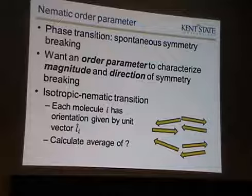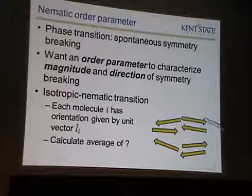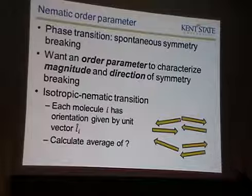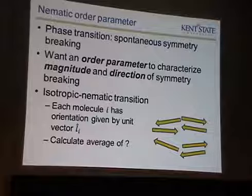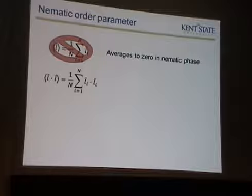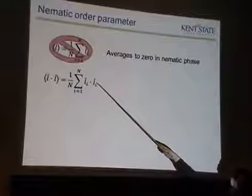The thing that went wrong with this guess was that it is odd in these vectors — it's the opposite when you have this vector or the negative of this vector. So instead of that, if you don't want it to average to zero, you better pick something which is even in these vectors — the same for a vector or for negative vectors. Here's another guess: let's take the average of this vector dot product with itself.